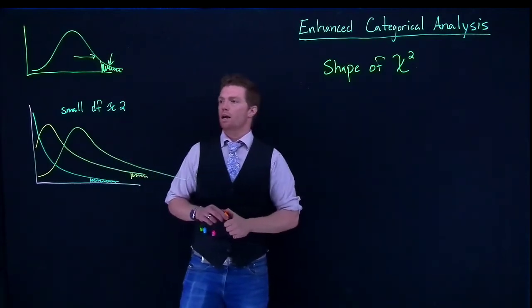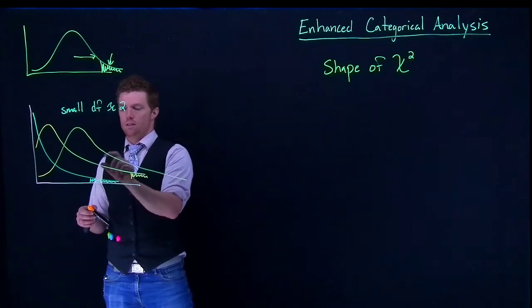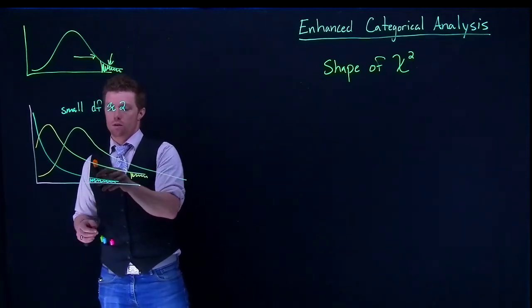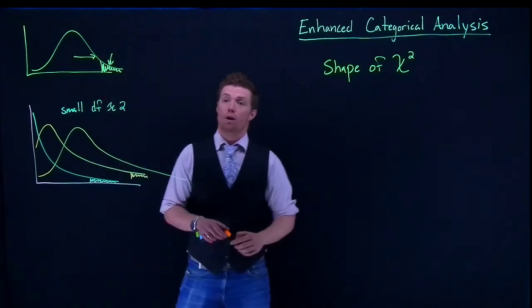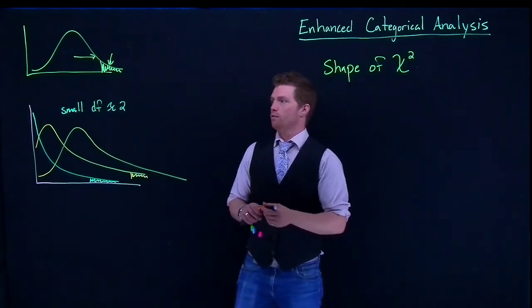On our chi-squared, we are just doing the area from the critical point to the right, and that's just how those p-values are calculated.